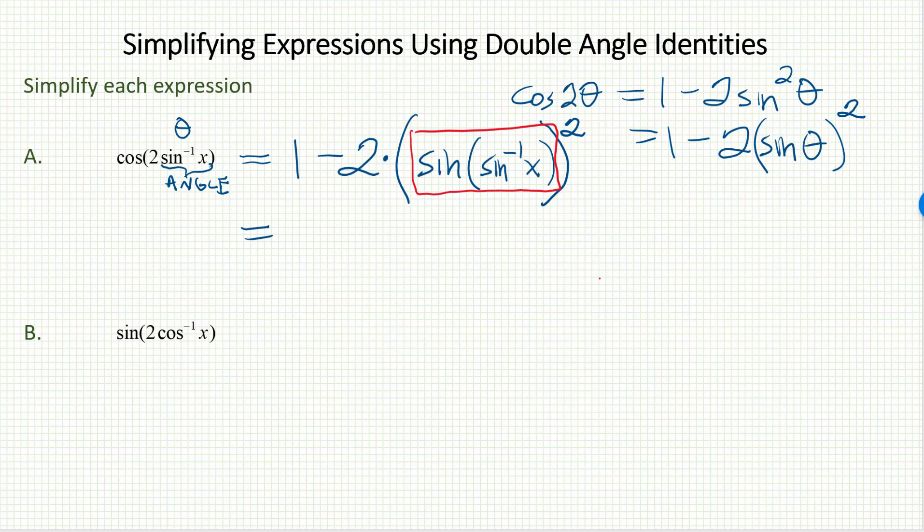Sine and sine inverse wipe each other out. So, this is just 1 minus 2, that entire parentheses is just x. It is being squared, and I'm done.